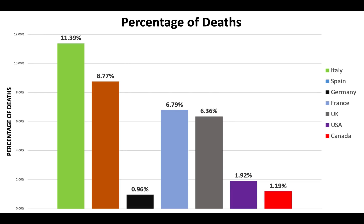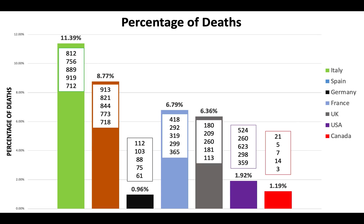The percentage of deaths are as follows. The high is Italy at 11.39%. The low is Germany at 0.96%. Canada is 1.19%. If we overlay the number of deaths — the top number here is the most recent day — you can see Italy is still 800 to 900 deaths a day. Spain is around that mark as well. Germany is over 100 now. France has expanded over 400. The United Kingdom has leveled around 200. The United States has increased to over 500. And Canada is still really just in the double digits, 21 today.